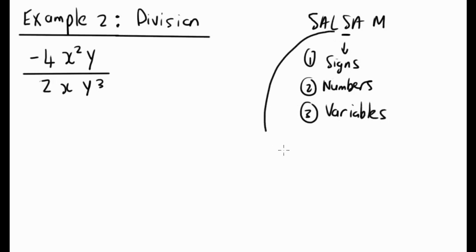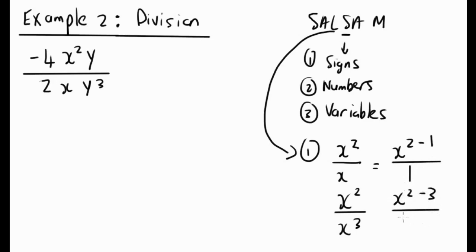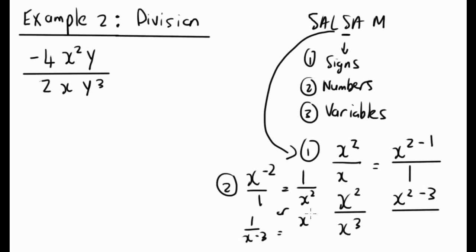There are two laws we're using here. Law one: x squared divided by x to the power 1 equals x to the power of 2 minus 1. Even if you have x squared over x to the power 3, you still subtract — that's x to the power of 2 minus 3. Law two: a negative exponent like x to the power of negative 2 equals 1 over x squared, and conversely 1 over x to the power negative 3 equals x cubed over 1.